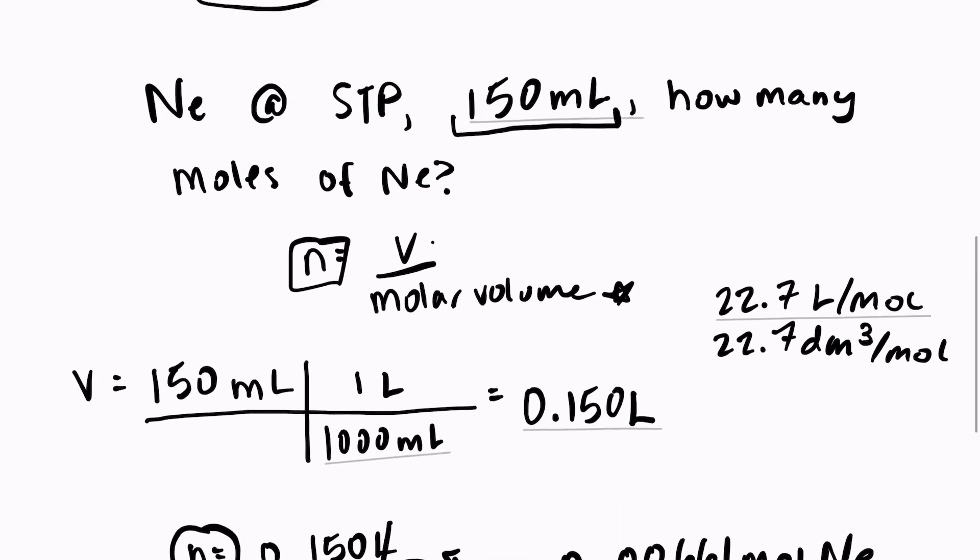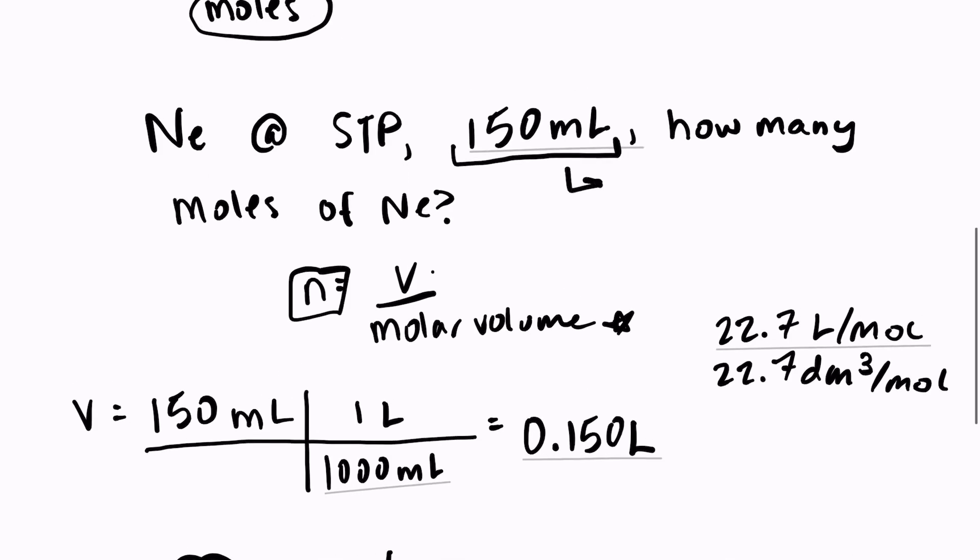And just a note here, milliliter is the same as centimeters cubed. So if you were given 150 centimeters cubed, you would still have to divide by 1000 so that your unit would be decimeters cubed per mole. The only units that we can use for molar volume are liters per mole or decimeters cubed per mole.